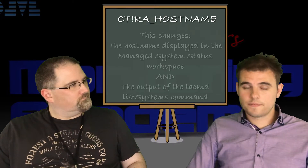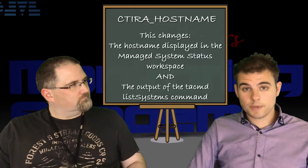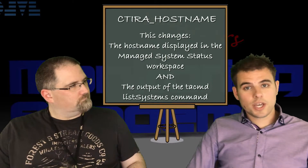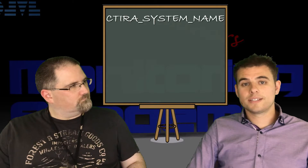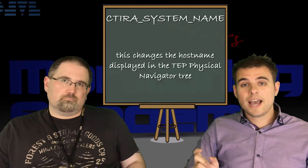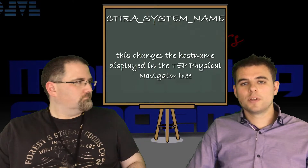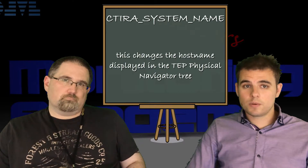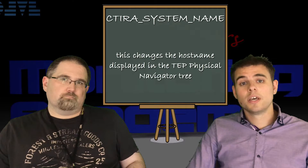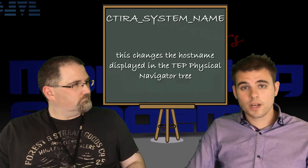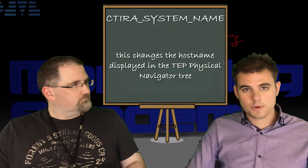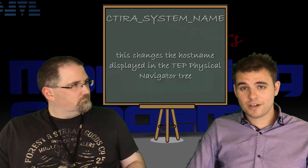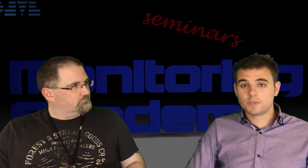This parameter controls two key areas: it will show in the Managed System Status workspace, and it will also appear when you run tacmd listsystems. However, it will not change the name in the TEPs until you also set CTIRA system name as a parameter. It has to match exactly the same value as CTIRA host name. If they differ, you'll get different outputs in different places. CTIRA system name changes the host name displayed in the TEPs and the navigation tree. You have to put them both together to change ITM as a whole; if you do one or the other you will see strange results and different names with different outputs.